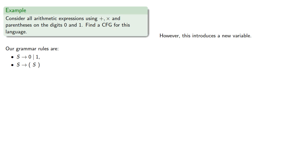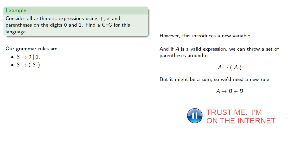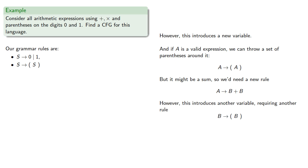While this seems like a good idea, this does introduce a new variable. And if a is a valid expression, we can throw a set of parentheses around it. So we need the rule A produces parentheses A. But it might also be a sum, so we'd also need a rule A produces b plus b. However, this introduces another variable, requiring another rule b produces parentheses b, and so on. So how do we avoid introducing an unlimited number of variables?